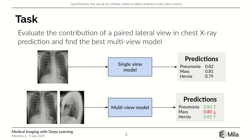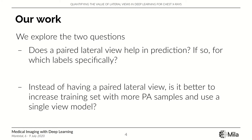The essence of our work is to compare different multi-view approaches against a single-view baseline and examine the fine-grained differences between all the models — for example, how the per-label AUC changes. We have two broad questions: does the lateral view actually help in prediction, and if so, for which labels specifically?